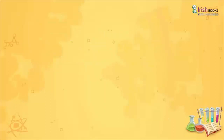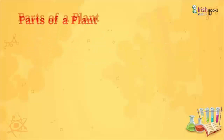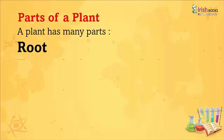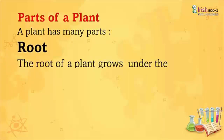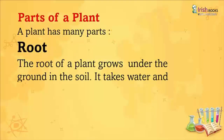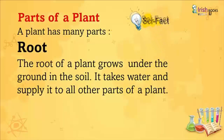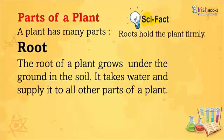Parts of a Plant: A plant has many parts. Root: The root of a plant grows under the ground in the soil. It takes water and supplies it to all other parts of the plant. Science fact: Roots hold the plant firmly.